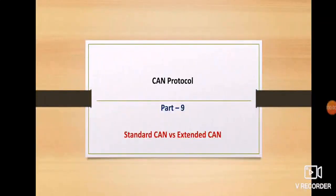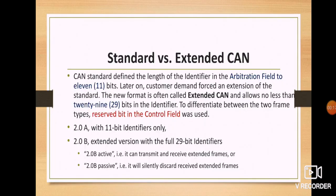This is CAN protocol part 9: the standard CAN and the extended CAN. In this tutorial we are going to see the clear definition and the exact difference between the standard CAN and extended CAN. The CAN standard defines the length of the identifier in the arbitration field as 11 bits. When CAN was first invented, the 11-bit identifier was implemented and used by all vendors.